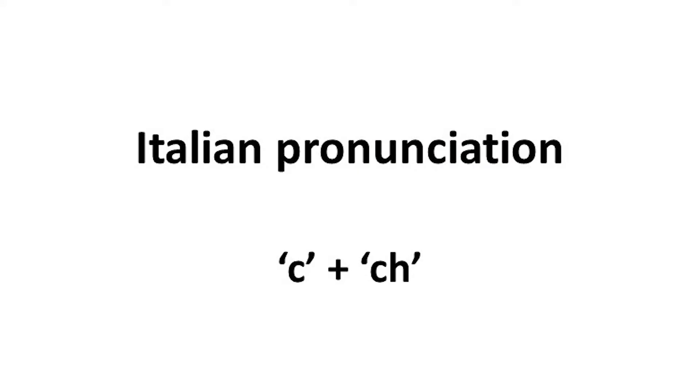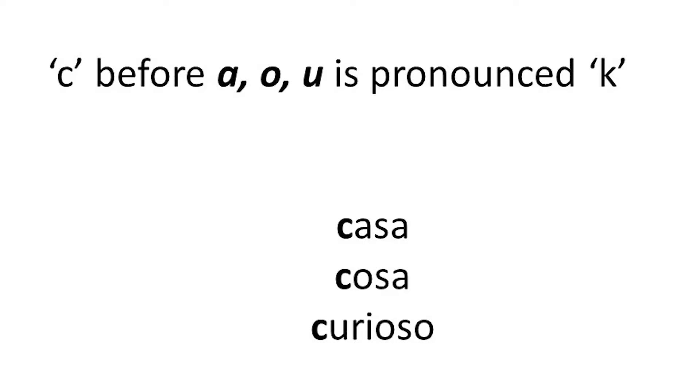Italian is a very easy language to pronounce. It's much easier than English, much easier than German. But if you've studied Spanish, you have to try and remember that some things are not exactly the same. So just now I want to look at two sounds, two letters that are different, and that is C and K. When we have C before A, O, or U, it's pronounced K.